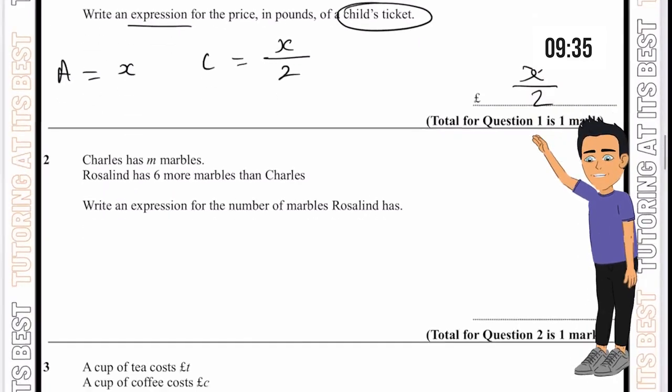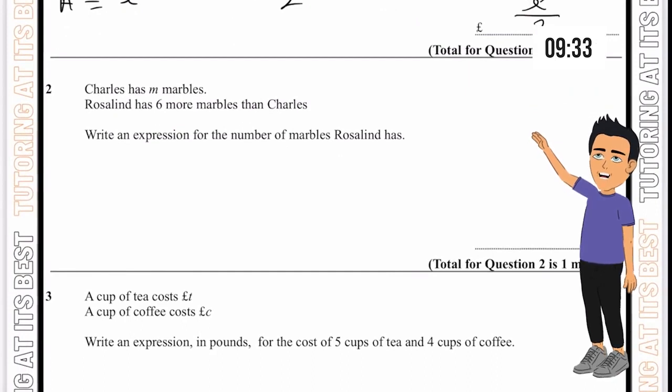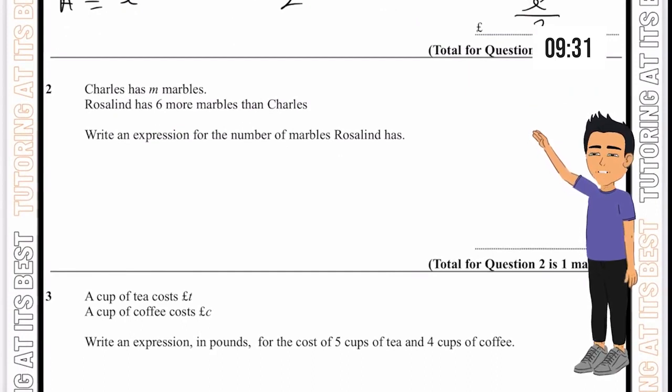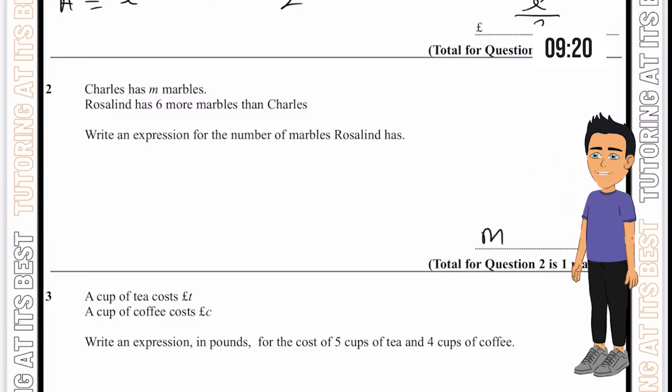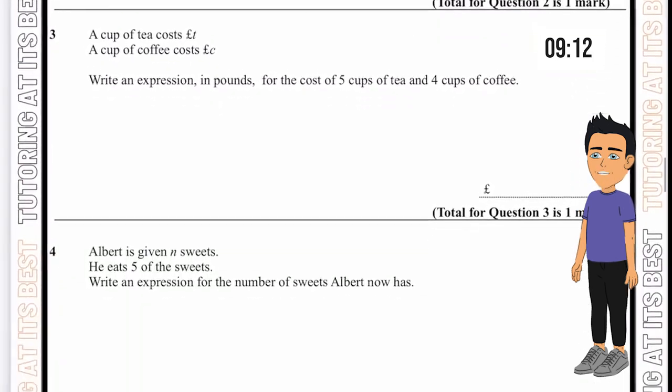Question 2. Charles has m marbles and Rosalyn has 6 more marbles than Charles. Write an expression for the number of marbles Rosalyn has. If Charles has m and Rosalyn has 6 more, we can simply write m plus 6.